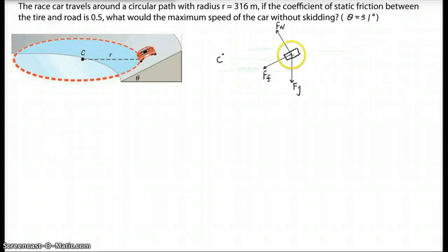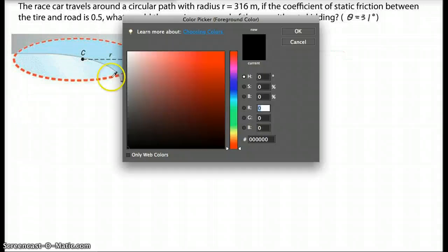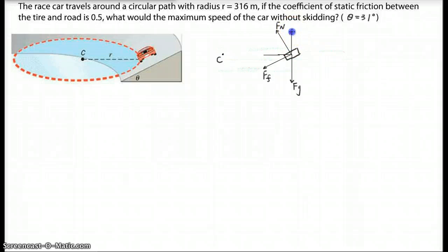For example, we resolve the normal force this way, and friction this way. I'm going to do a different color for the components. So we do have components here. So this is Fn Y, this is Fn X. This is going to be Ff X.